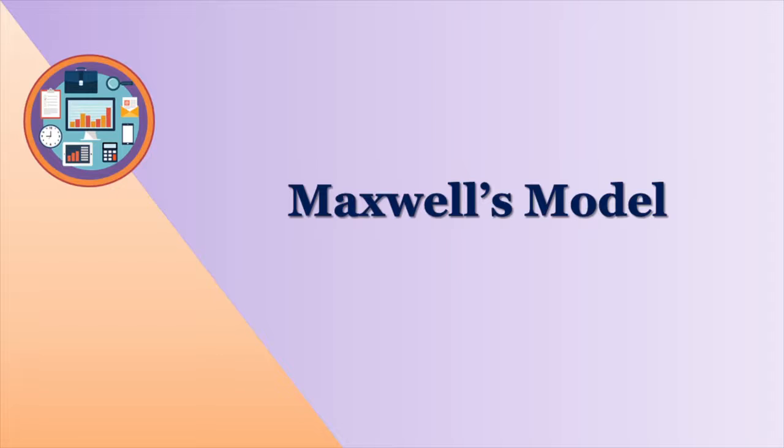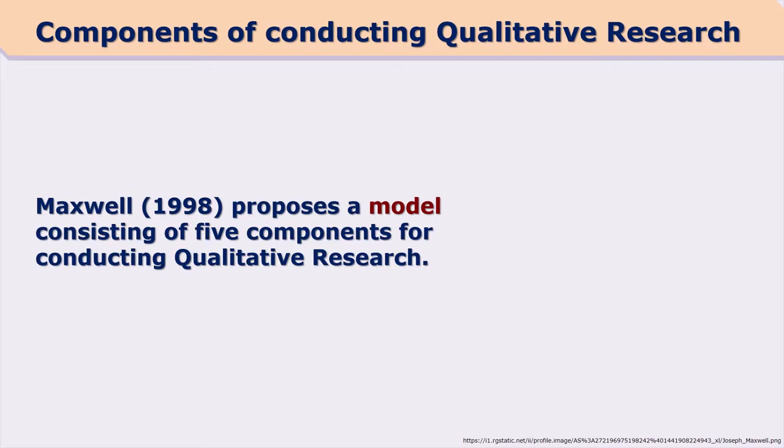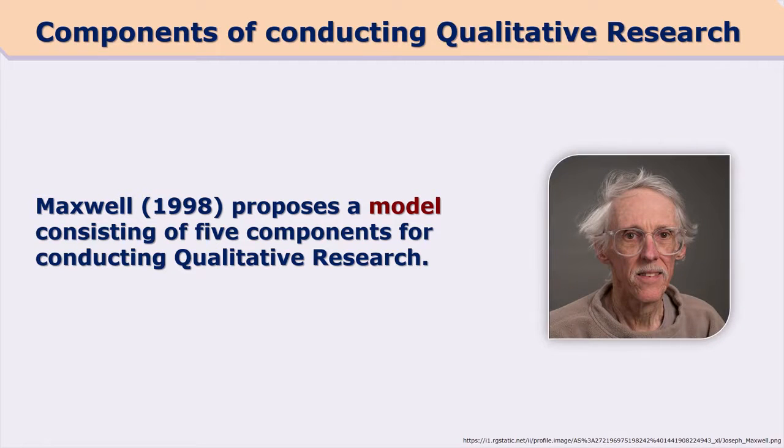To understand the basic components of qualitative research, Maxwell has given a model. Maxwell in 1998 proposed a model consisting of five components that are useful for conducting qualitative research.